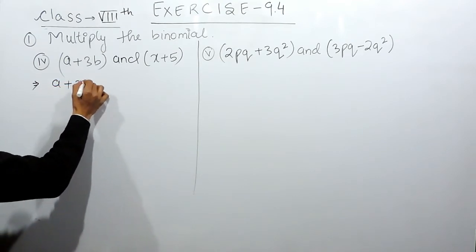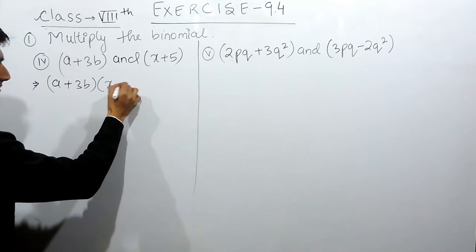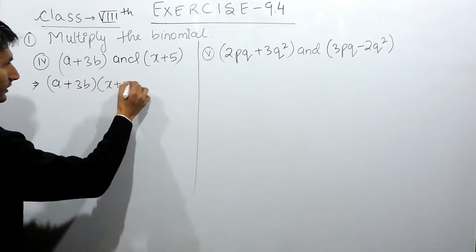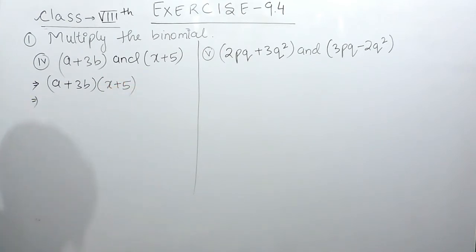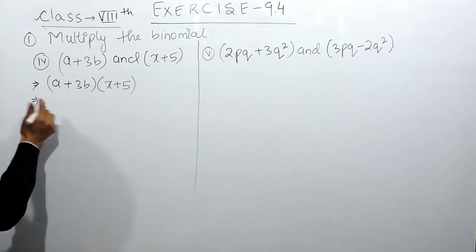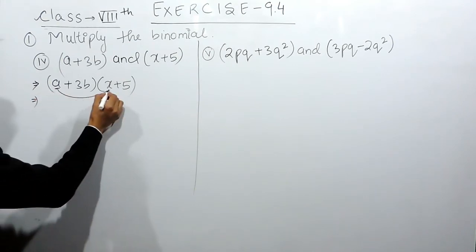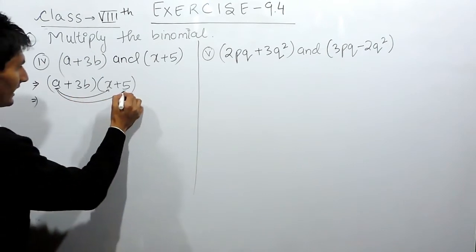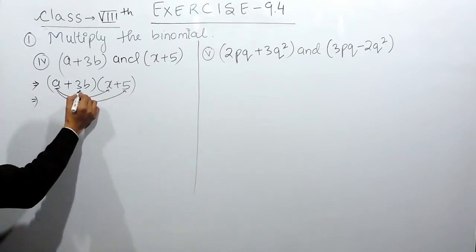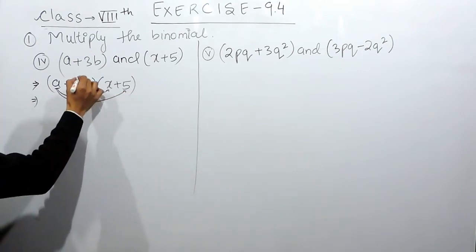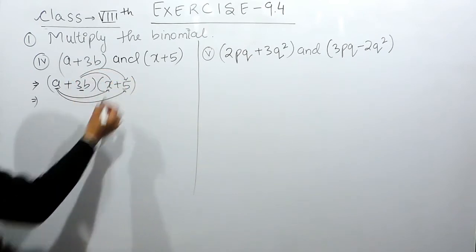So this is (a + 3b) and this is (x + 5). These two binomials have to be multiplied with each other. To do that we have to multiply the first term with each term of the second binomial, and similarly multiply the second term with each term as well.